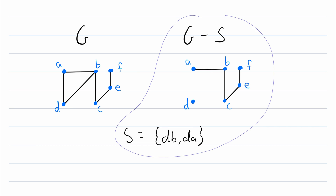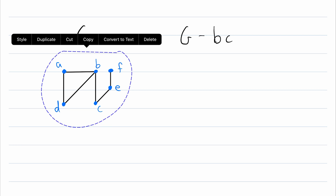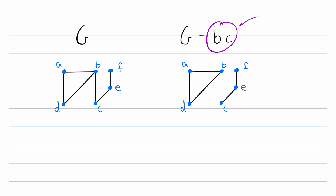Let's look at one more thing of interest. Let's say we delete edge BC from our graph G, so this is the graph G minus BC. Again we keep the same exact vertex set — no vertices are deleted when we delete edges — then we just remove that edge BC. Notice that this disconnects the graph; we've gone from one component to two components, thus the edge BC is called a bridge.